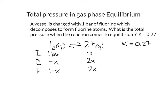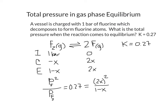The equilibrium expression for this reaction is the pressure of fluorine atoms squared — because I have two fluorine atoms for every diatomic fluorine — divided by the pressure of F₂. That equals 0.27. Substituting the equilibrium amounts, I have (2x)² divided by (1 minus x) equals 0.27.